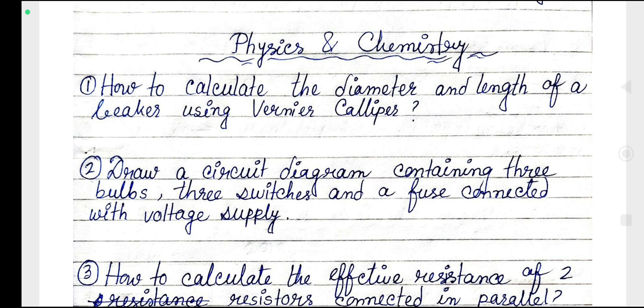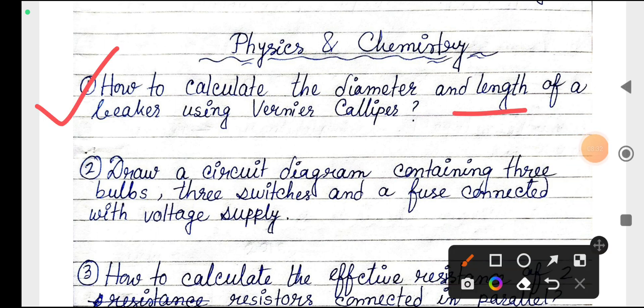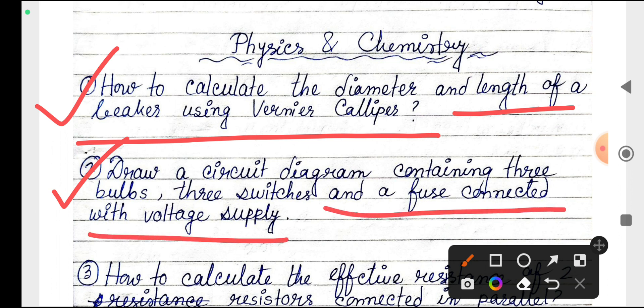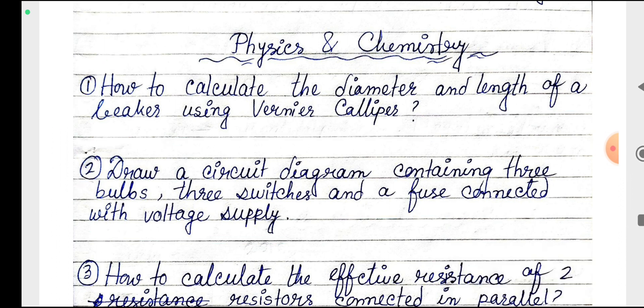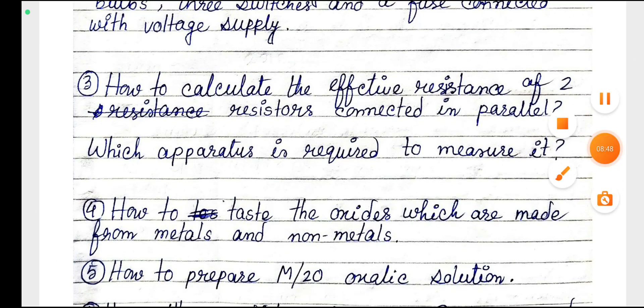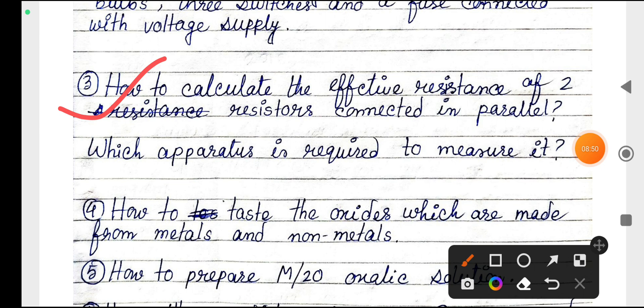How to calculate the diameter and length of a beaker using Vernier Caliper. Next, draw a circuit diagram containing three bulbs, three switches and a fuse connected with voltage supply. Next, how to calculate the effective resistance of two resistors connected in parallel, which apparatus is required to measure it.